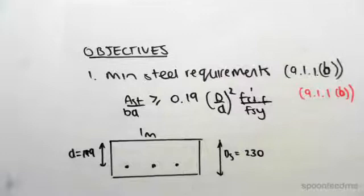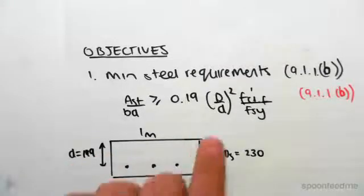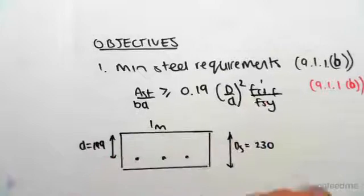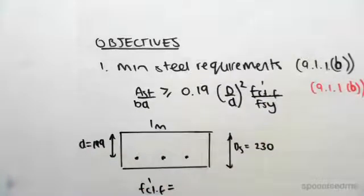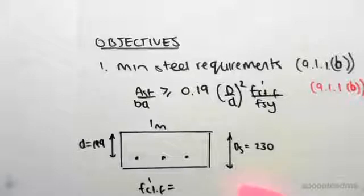I'm just going to start - well actually before I sub in the values we just need to find one more value. We need to find this fct.f, so you get this from right at the start of the standard.